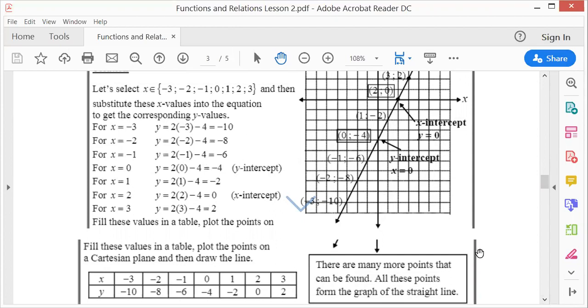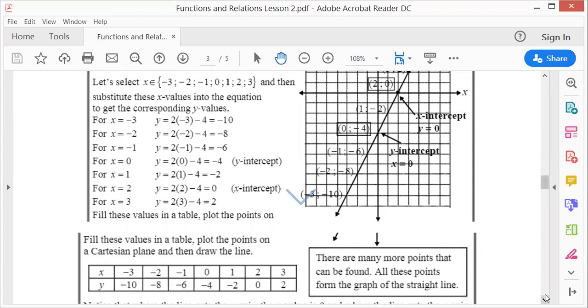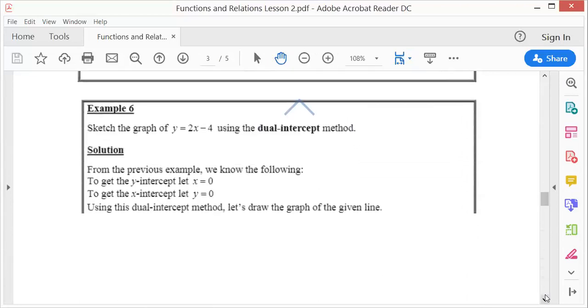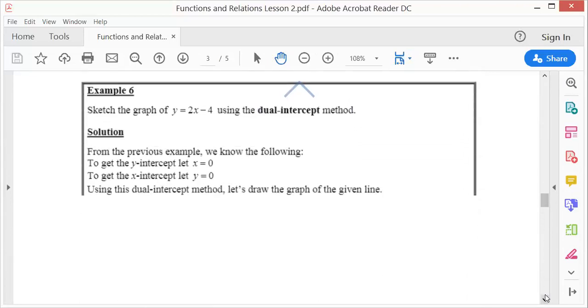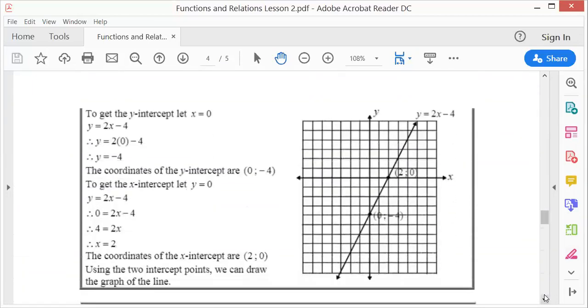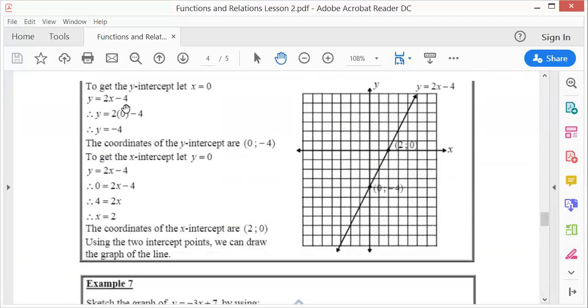So those two points, this one here and this one here, you can also use to draw a graph. We call it the dual intercept method. Now in questions, example 6, you must use now this dual intercept method. So you must let y, to find the y-intercept let x be 0, to find the x-intercept let y be 0.